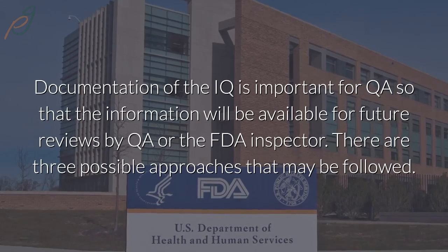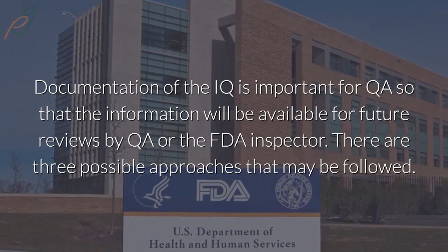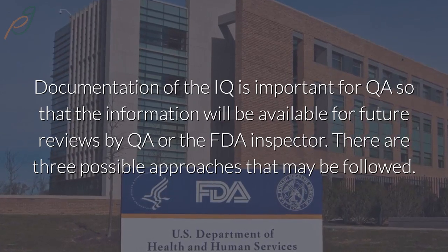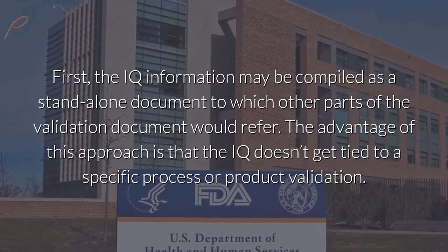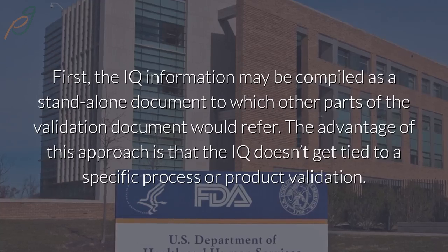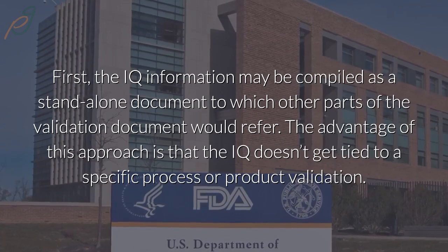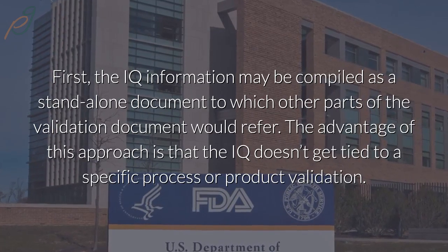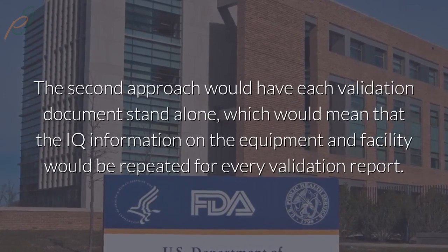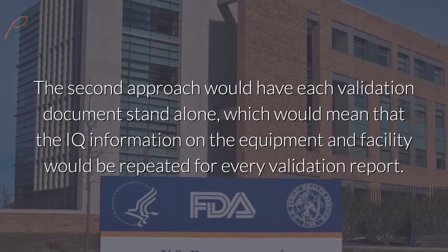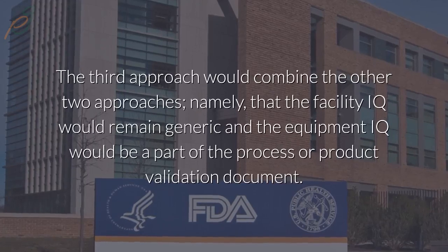Documentation of the IQ is important for QA so that the information will be available for future reviews by QA or the FDA inspector. There are three possible approaches that may be followed. First, the IQ information may be compiled as a standalone document to which other parts of the validation document would refer. The advantage of this approach is that the IQ doesn't get tied to a specific process or product validation. The second approach would have each validation document stand alone, which would mean that the IQ information on the equipment and facility would be repeated for every validation report.